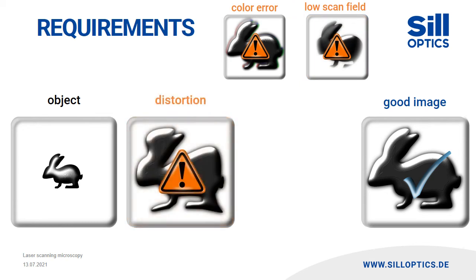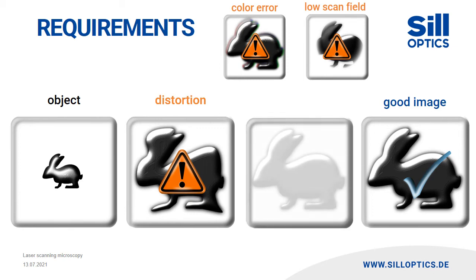Scan lenses with a large input beam diameter and a short focal length allow very small spot sizes and thus extremely high resolutions. In addition, the transmission must be maximum for excitation and fluorescent wavelengths so that the maximum part of the fluorescent light reaches the detector even with low excitation powers.